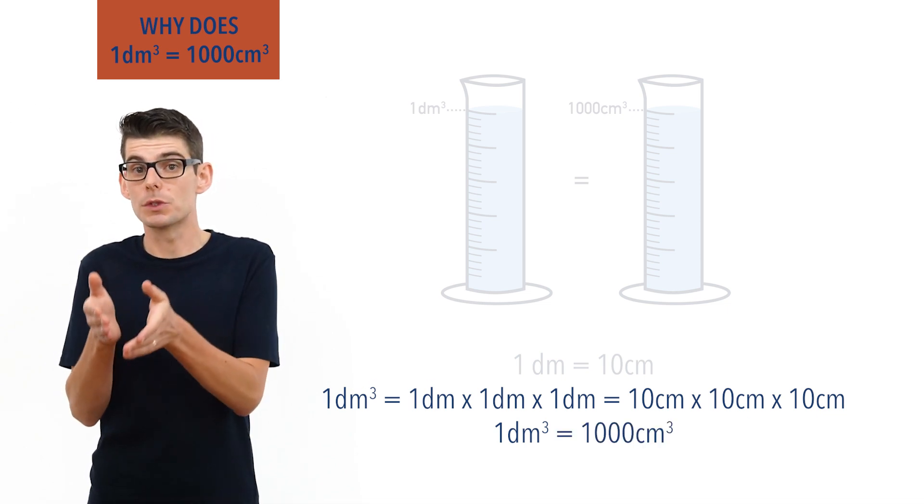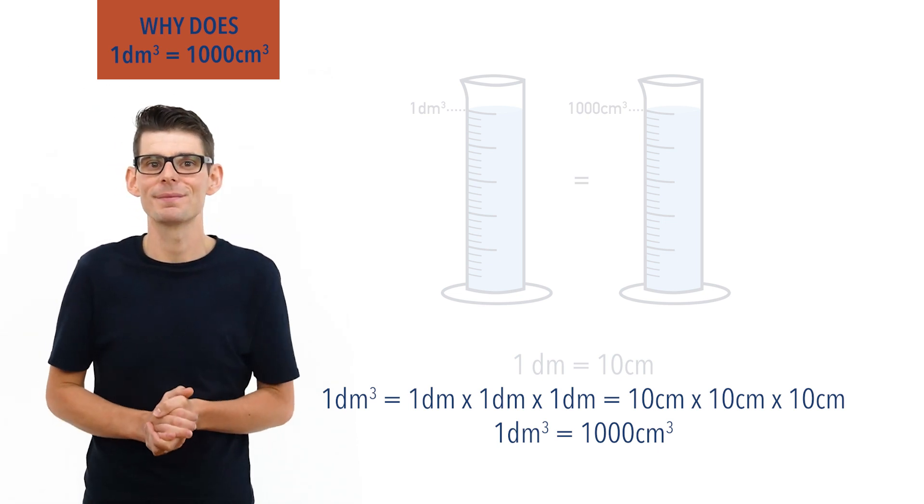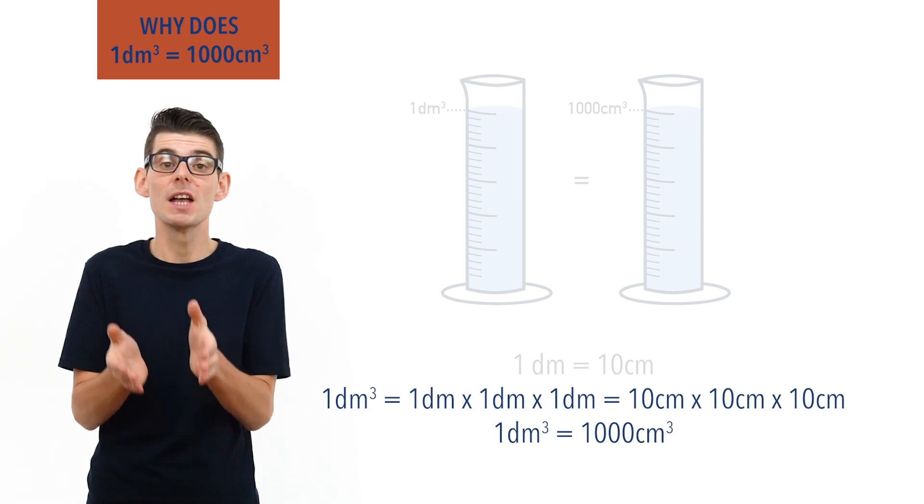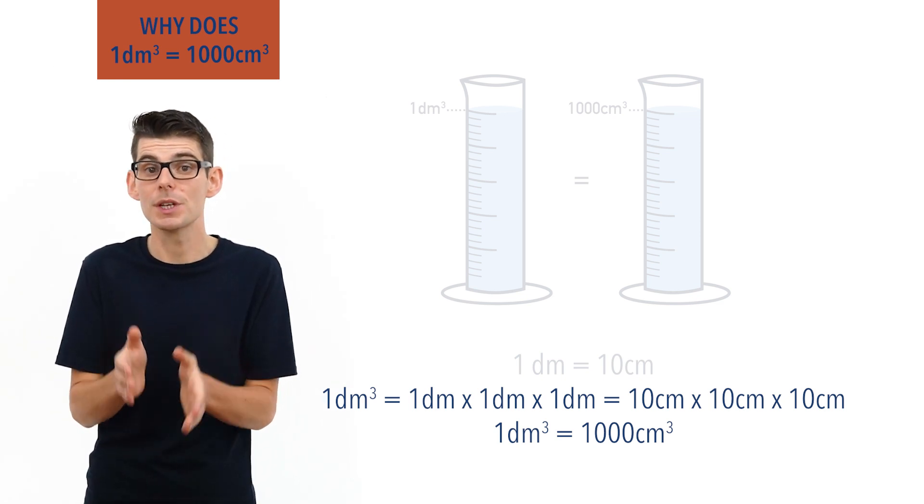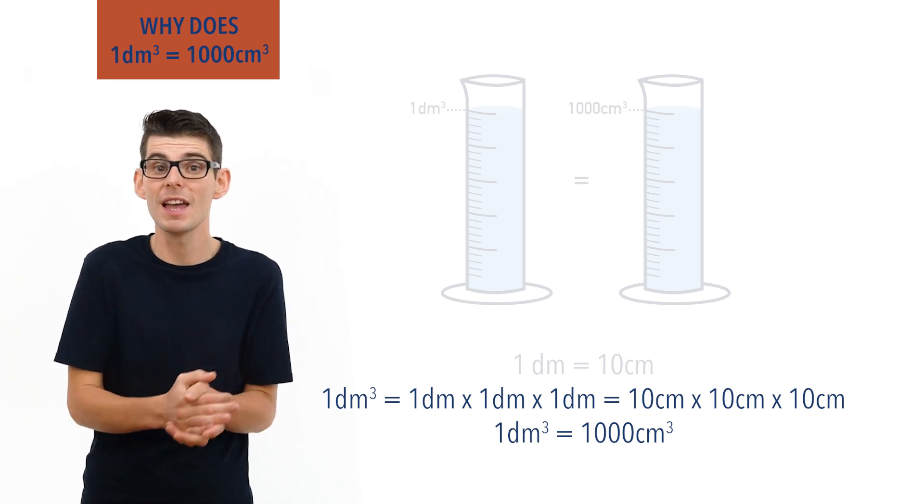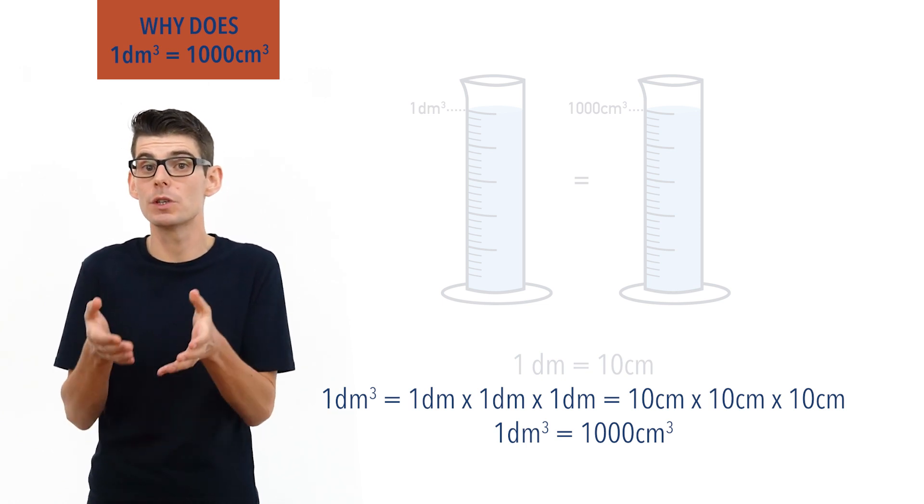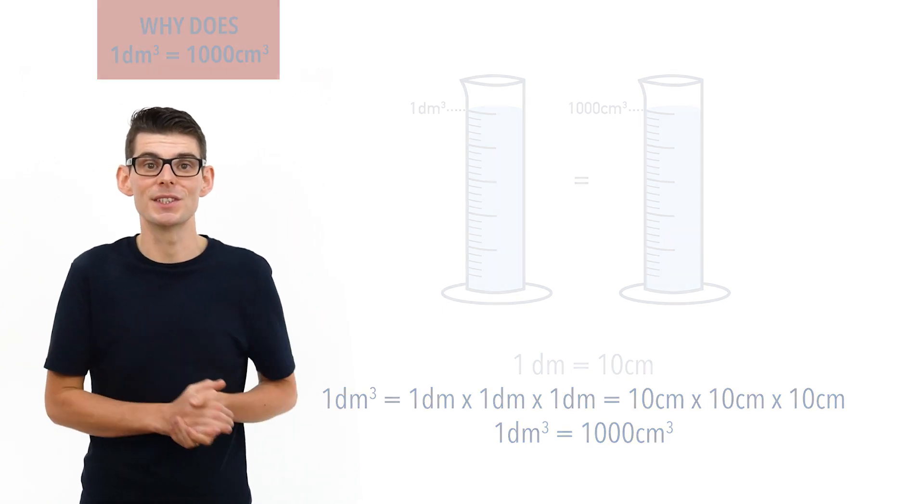As a result, 1 decimetre cubed equals 1000 centimetres cubed. Being able to convert between decimetres cubed and centimetres cubed is important, as very often small volumes of solutions are used in chemistry, and it's simply more practical to measure these volumes in centimetres cubed rather than decimetres cubed.